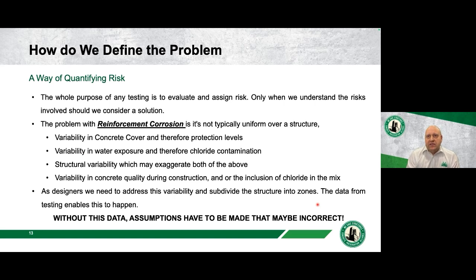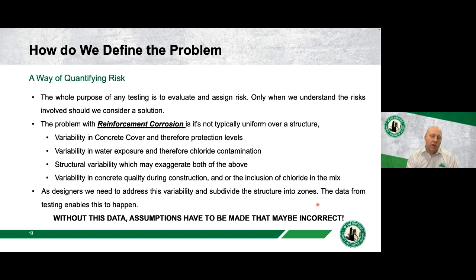We need to understand risk because reinforced corrosion in most cases is not uniform over a structure. We have variability in concrete cover — the primary defense mechanism for reinforced concrete — variability in water exposure and chloride contamination, structural variability, and variability in concrete quality during construction. We even had cases where chlorides were already included in the mix from new construction. We need to address that variability by dividing the structure into sub-zones.